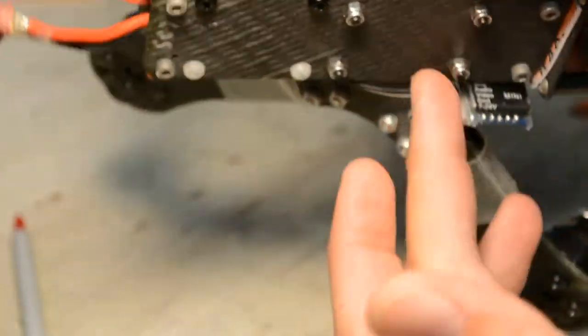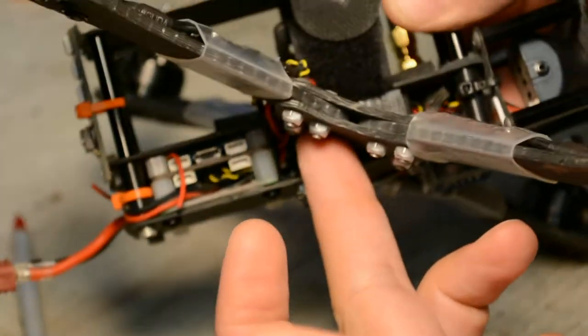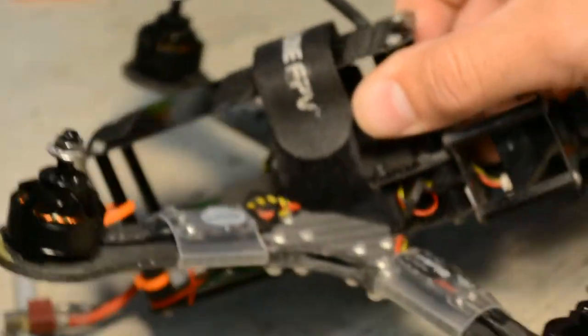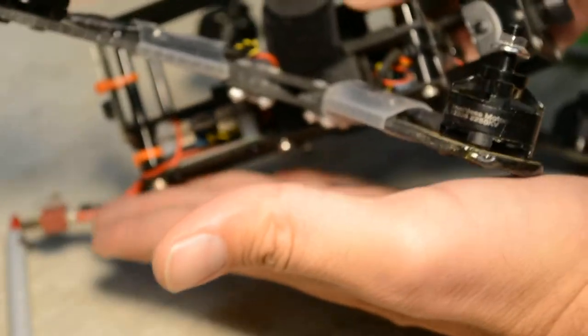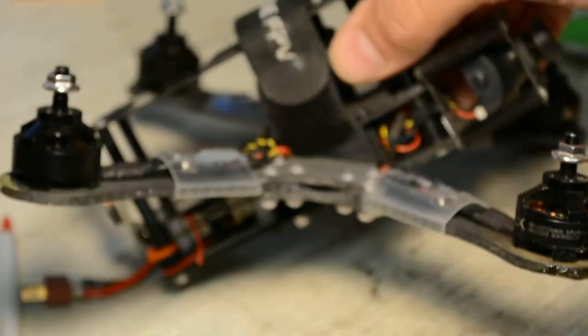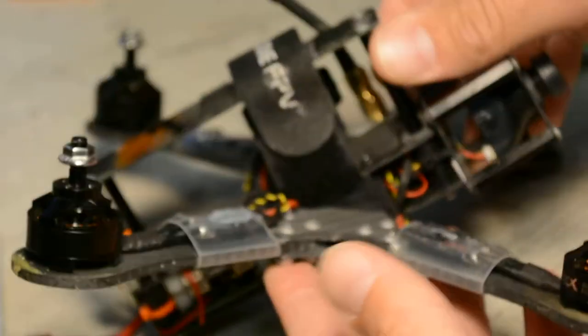Also, you don't have to worry about the wires when they do come under the bottom, because when it sits down it's never touching. You see the plane here, it's never touching the ground anyway.